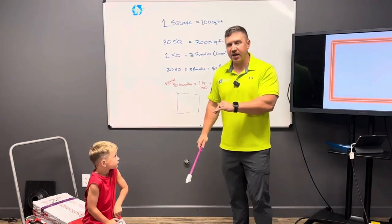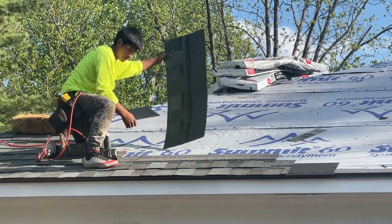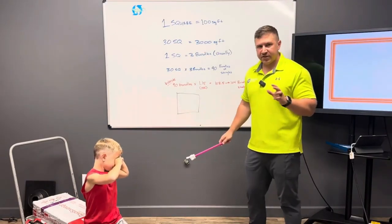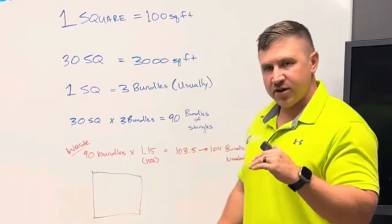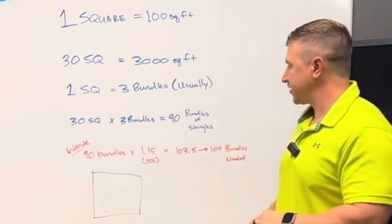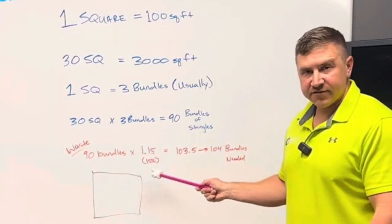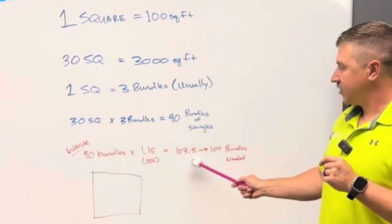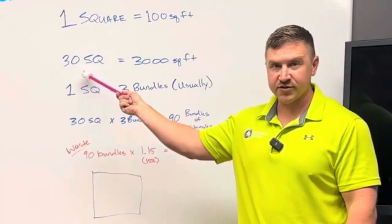Now, 90 bundles is not going to be enough to do 30 squares. When a roofer is installing shingles, they're actually having to cut — there's a lot of waste. As a basic rule of thumb, we start at about 15% waste. If it's a very simple house, we can go down to 12%, but you will see a waste factor of anywhere from 15% to 25% on very complex roofs. Using 15% waste factor, that 90 bundles multiplied by 1.15 gives us 103.5, rounding up to 104 bundles to do 30 squares of shingles.